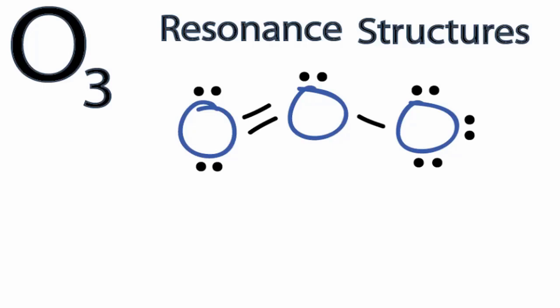We can draw O3 different ways. First, we can draw it with a double bond on the left, a single bond on the right, and this works. We're using all 18 valence electrons for O3, and each of the atoms has a full outer shell.